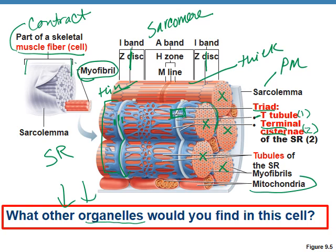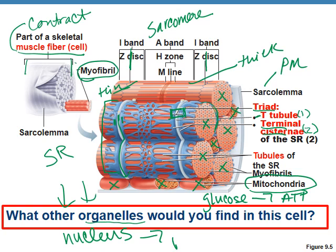Other organelles in this cell include many mitochondria, because we have to take glucose and turn it into ATP energy. We also must have a nucleus — because we have to make proteins: myosin, titin, F-actin, G-actin, tropomyosin, and troponin. They're all made by the muscle fiber cell, and to make proteins, you have to have DNA.